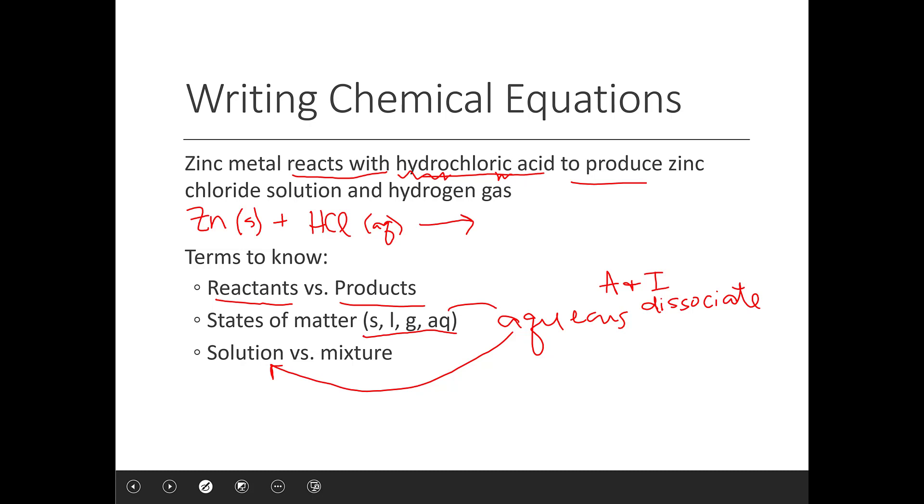And it says to produce, which tells me, hey, now I need my arrow signifying that now I'm switching to the products. And it says I produced zinc chloride solution.